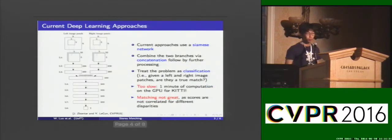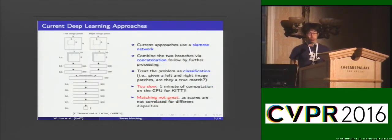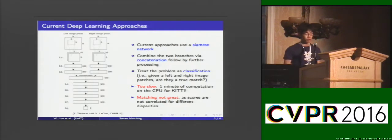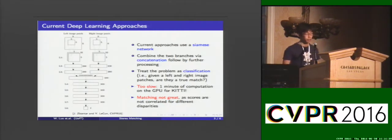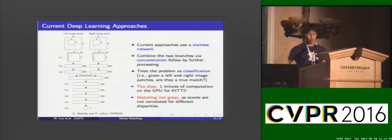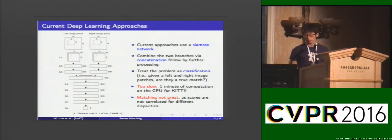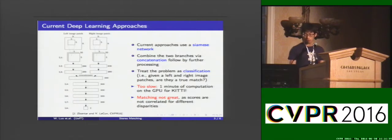It works very well, but the problem is that it's too slow. It requires one minute of GPU computation for a single image on the KITTI dataset, and also the matching itself was not great because the scores are not correlated for different disparities.